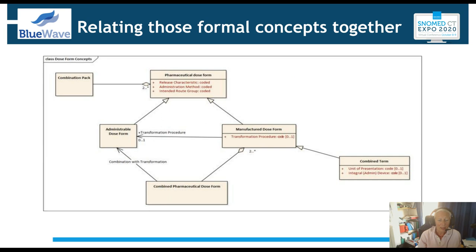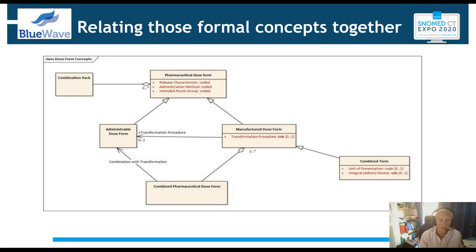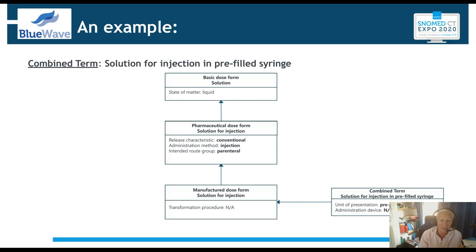I drew a diagram to show how these terms relate. The manufactured dose form and administrable dose form are both children of the pharmaceutical dose form. The combined dose form may contain more than one manufactured dose form and may produce an administrable dose form — powder and solvent for solution for injection produces the administrable dose form of solution for injection. The combination pack contains two or more pharmaceutical dose forms. I built this for myself but have found it helpful for others to understand how these different things relate together.